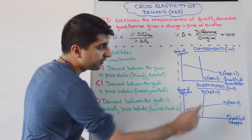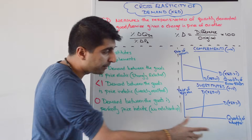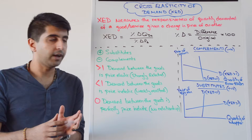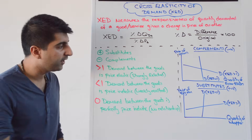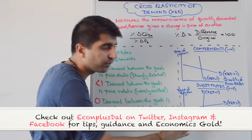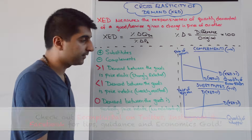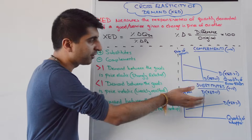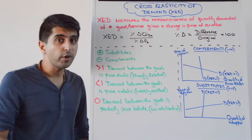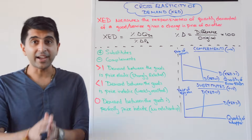For substitutes, which have a positive XED, I've taken the price of a Big Mac on the y-axis and quantity of a Whopper on the x-axis — two different goods, but they are positively related. So our demand curve will be upward sloping — don't let that confuse you, it's only because we've got two different goods on the axis. For a strongly related substitute draw a shallow curve; for weakly related substitutes draw a steep curve, for exactly the same reasons as before. So if you have to show XED on a diagram, or you have multiple choice questions, these are the diagrams that you need. That covers XED perfectly.